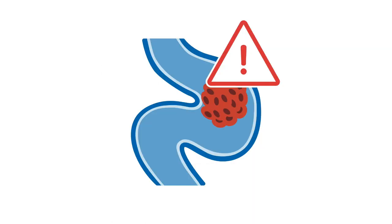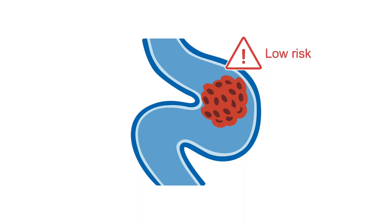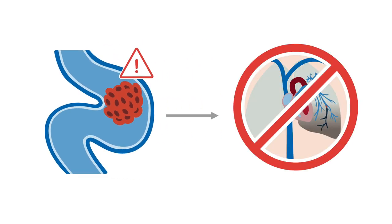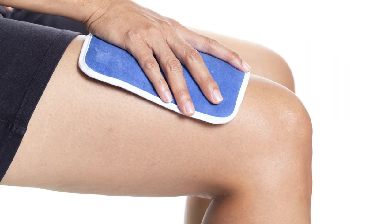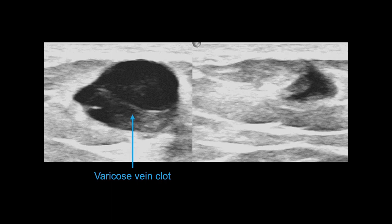A clot within a varicose vein may be clinically relevant, though not regularly treated because of its low risk of connecting with the deep system and therefore low potential to cause a pulmonary embolus. A warm compress on the area is often recommended. Here you can see an example of a clot in a varicose vein, resulting in the vein only being partially compressible.